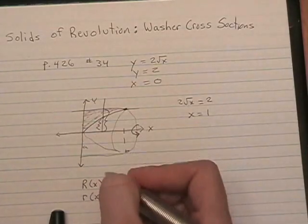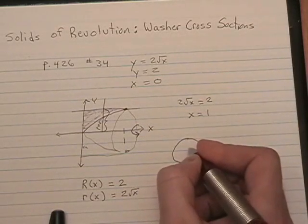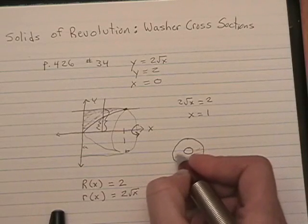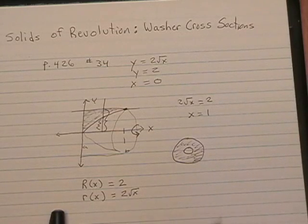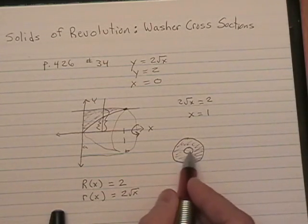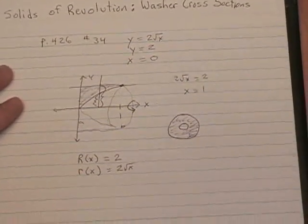Remember, when you cut this thing, when you slice it, your cross-section looks like a little washer. There's a hole in it. And in order to find this area, we're going to do the outside circle minus the inside circle, which is this big radius minus the little radius. Okay, we are ready to set up our integral, which is step 4 in the process.